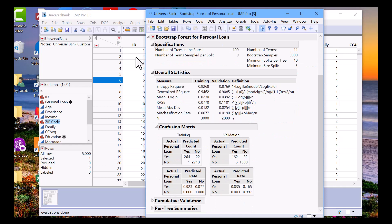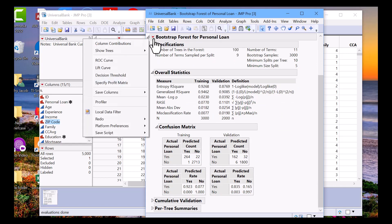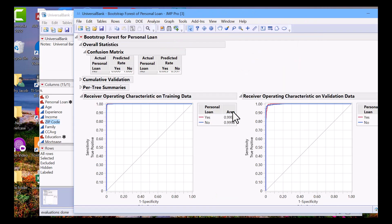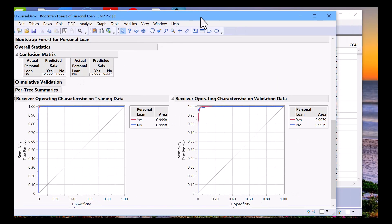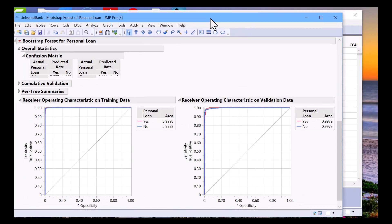If we want to look at how well our model did against the validation set, you can look at the ROC curve. We see that the accuracy is 0.99, so our model did an excellent job of classifying a record as whether they'll accept or not accept our personal loan.